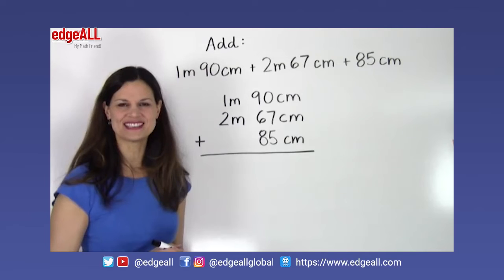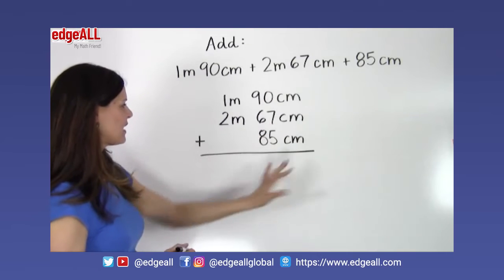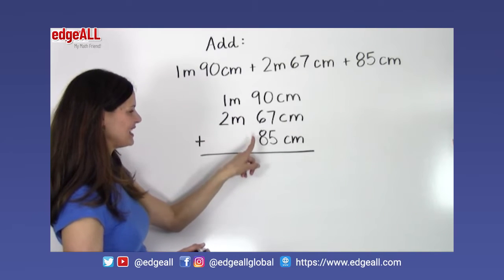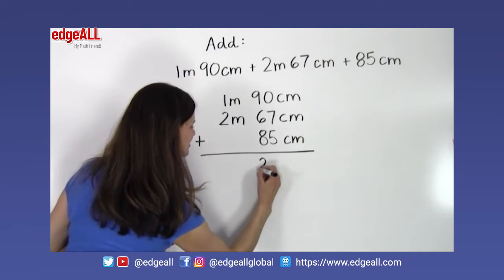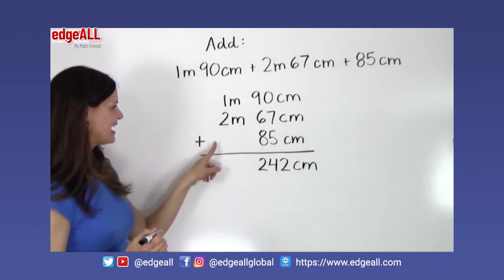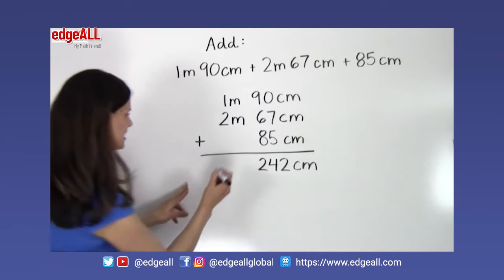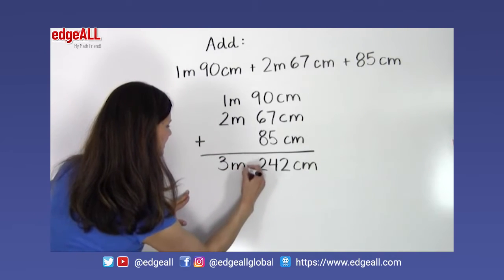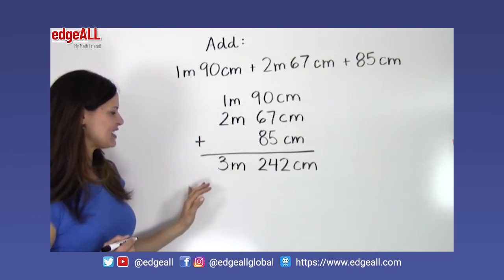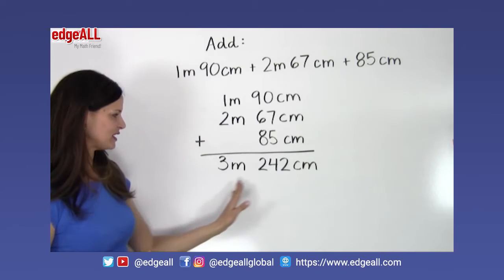So I have all of my measurements lined up vertically and now I'm simply going to add. So I'll start here by adding my smaller units together of 90 plus 67 plus 85 which equals 242 centimeters. And then I add my larger units here of 1 meter plus 2 meters which equals 3 meters. So this is my first step of adding like units and vertically aligning the units. Then my answer here so far is 3 meters 242 centimeters.